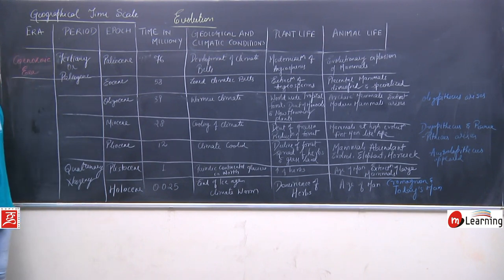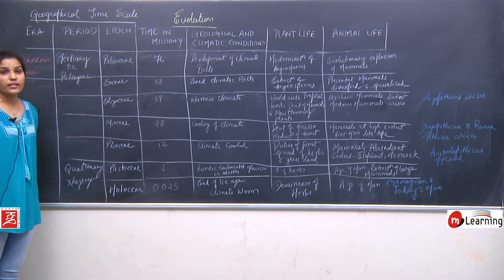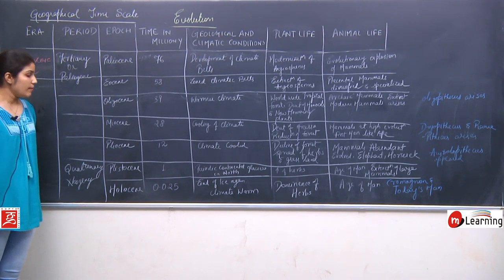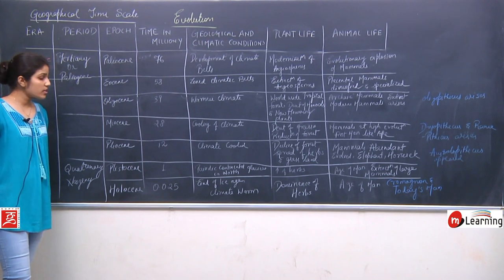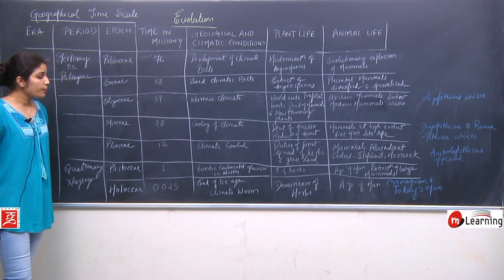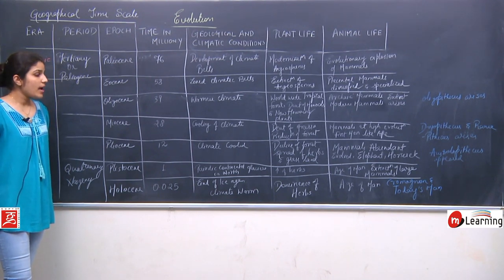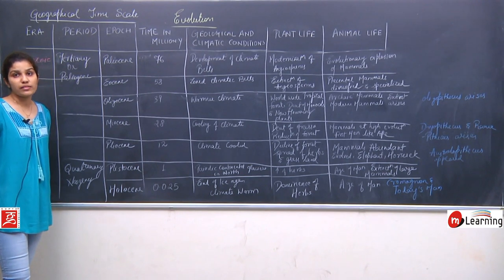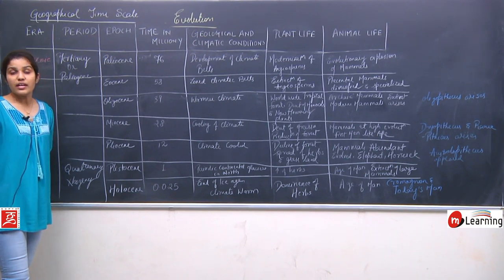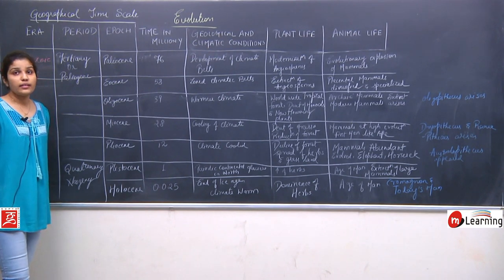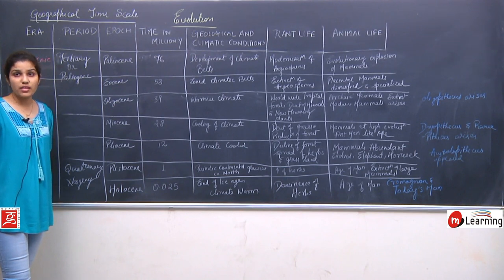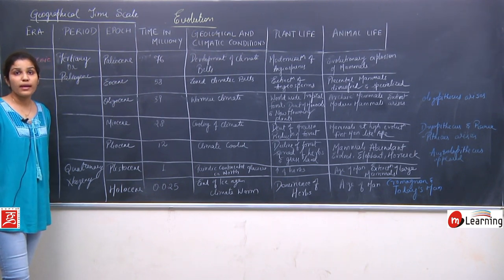The second period of the Cenozoic era is the Quaternary period, also called Neogene, divided into two epochs: Pleistocene and Holocene. Pleistocene was around 1 million years ago — it was the period of continental glaciers in the north. Glaciers started forming in the north pole and there was an increment of herbs. In animal life, it is the age of man and extinction of large mammals. Large mammals like Oligopithecus, Dryopithecus, Ramapithecus, and Australopithecus — these robust forms — are now declined. It is the age of modern man.